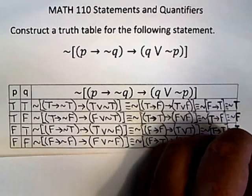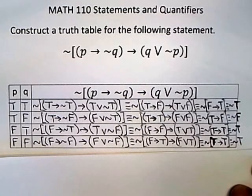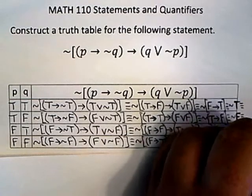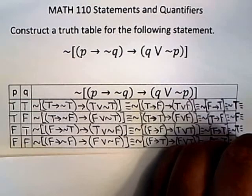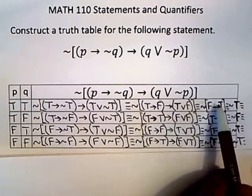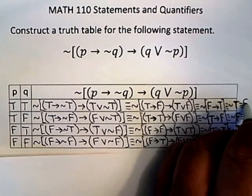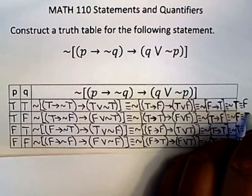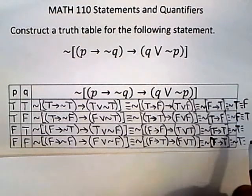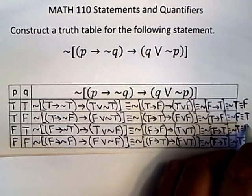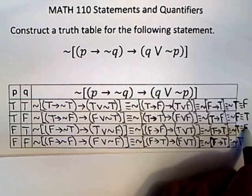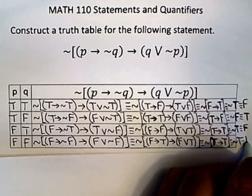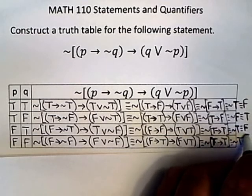But remember that there's a negation in front of all those. So to finish this thing off, you just get rid of the negation. So not true is false. Not false is true. Not true is false. And not true is false.